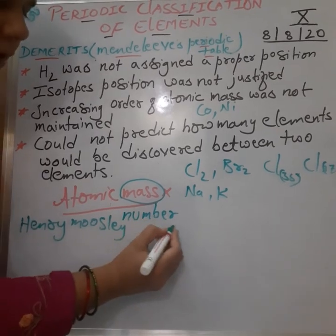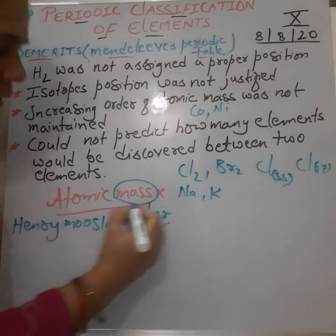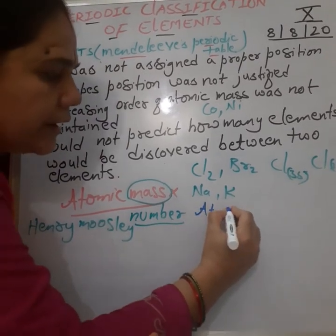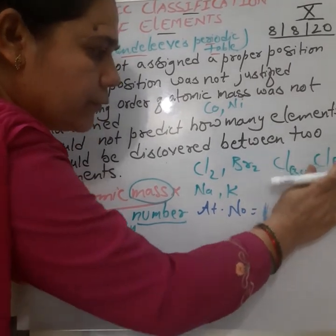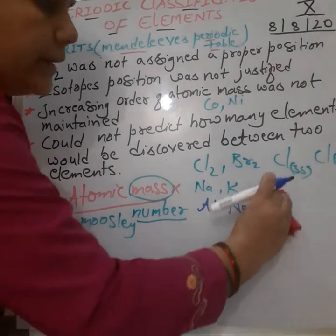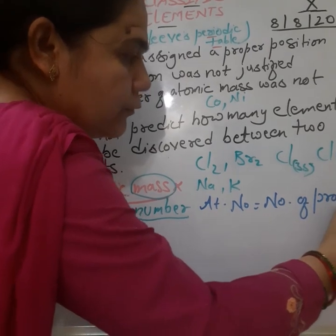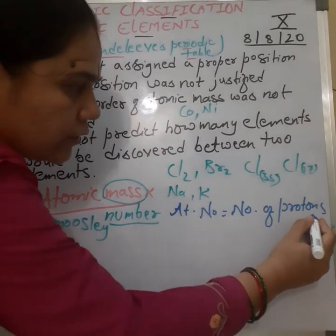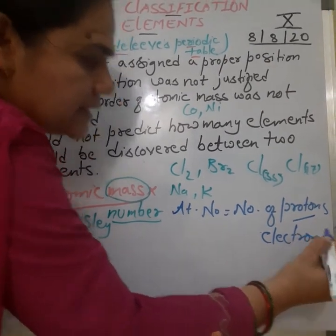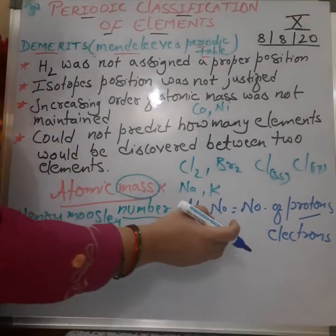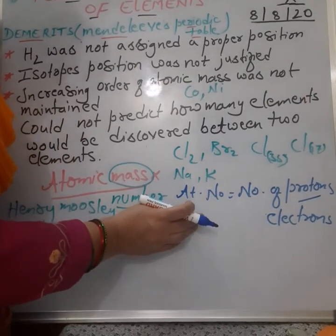Why was atomic number taken as a criteria? As you all know from your previous standard, atomic number is nothing but the number of protons in an atom, which is always fixed. This is also equal to the number of electrons, but since electrons participate in chemical reactions, we will take the number of protons as the standard atomic number.